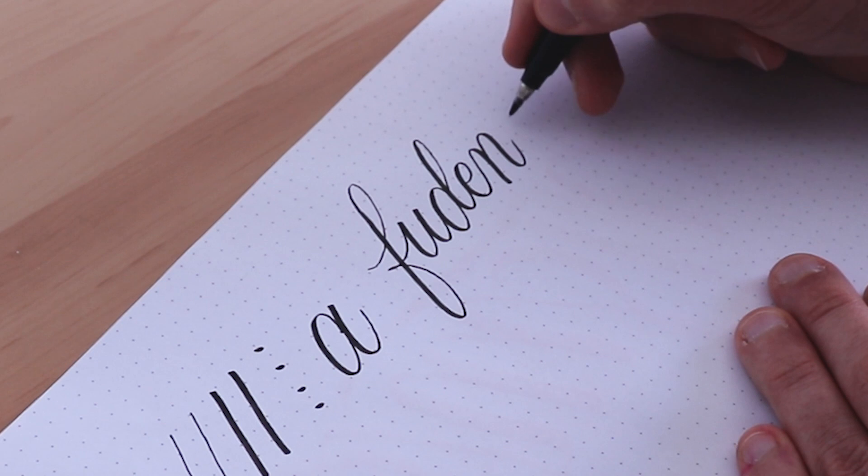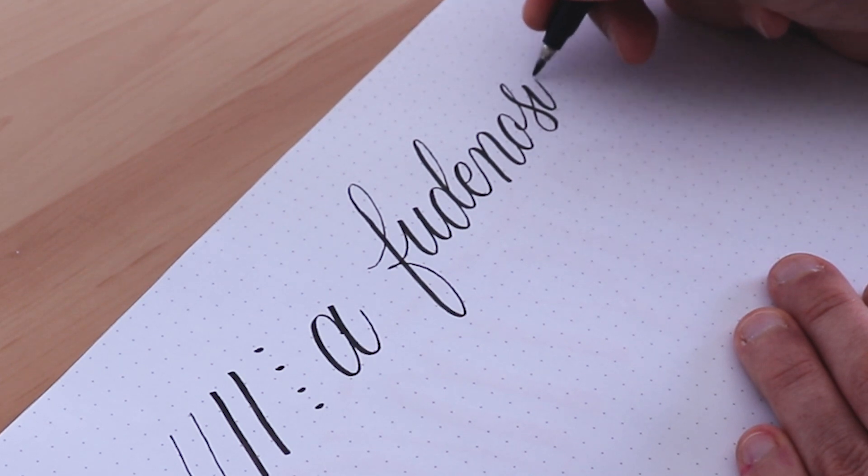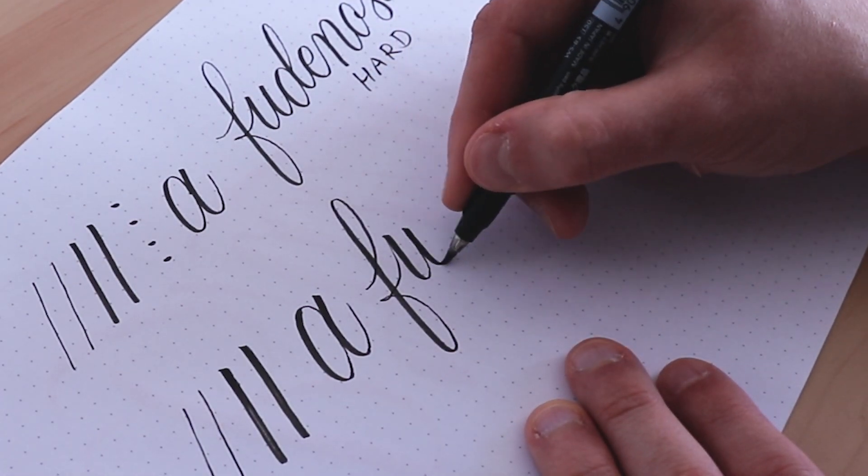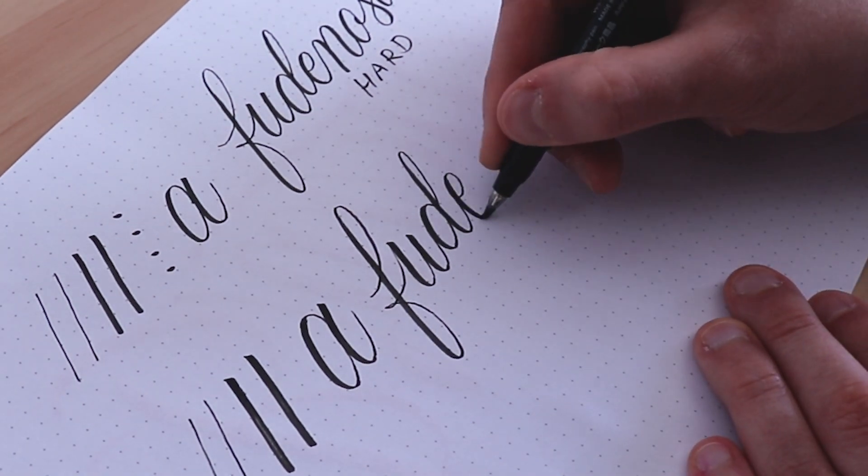It's safe to say that the Fudenosuke is an amazing brush pen. It's cheap, it's durable and it's extremely easy to work with. As I mentioned earlier it comes with both a hard and a soft tip. I personally enjoy working more with the hard tip but the soft tip is great as well.